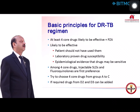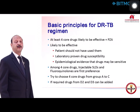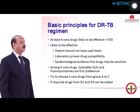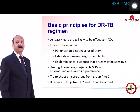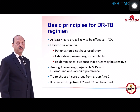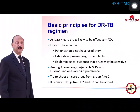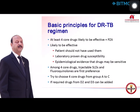The basic principles of managing drug-resistant tuberculosis: we must use at least four core drugs likely to be effective, along with pyrazinamide if it can be given. 'Likely to be effective' means the patient has not used them earlier, there is laboratory-proven drug susceptibility, or there is epidemiological evidence of drug sensitivity. Among the four core drugs, we always prefer one injectable and one fluoroquinolone as first choice. We should try to choose four core drugs from groups A to C, and if required, add drugs from D2 and D3.